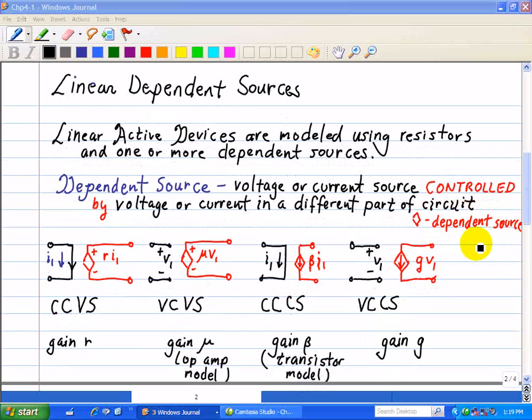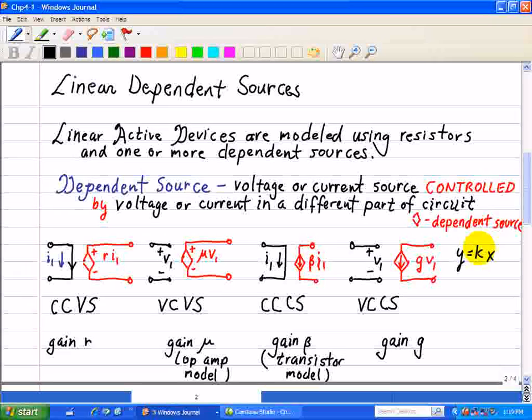Let's look at the proportionality factors R, mu, beta, and G. We have Y=KX, where X is our input, Y is our output, and K is our proportionality factor or parameter.